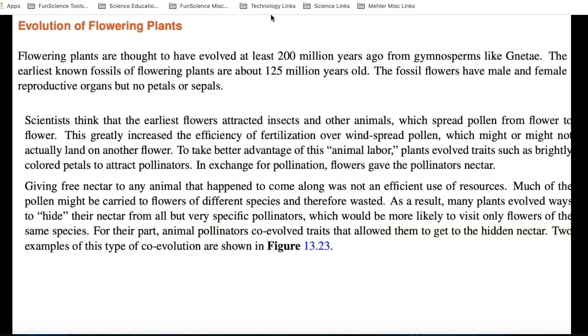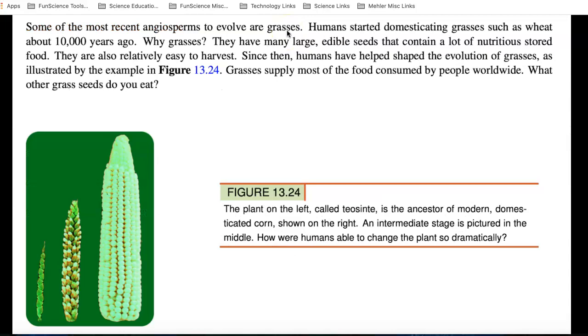Flowering plants were thought to have evolved at least 200 million years ago. But, we don't have any fossil evidence until about 125 million years ago. So, the fossil flowers have male and female reproductives, but no petals or sepals. Scientists think that the earliest flowers attracted insect and other animals and spread pollen from flower to flower. This greatly increased the efficiency of fertilization over windspread pollen. Make sure that you read this section about the evolution of flowering plants and why they were so important. Flowering plants became our most successful plants.